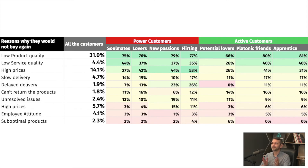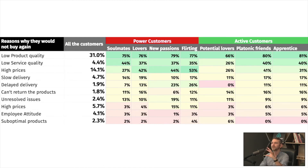The best thing about segmenting the NPS based on the RFM segments is that you'll see how various problems are more important to your best customers. In this example, we have the power customers, which are soulmates, lovers, new passions, and flirting. And we have the active customers as well, which are potential lovers, platonic friends, and the apprentices.